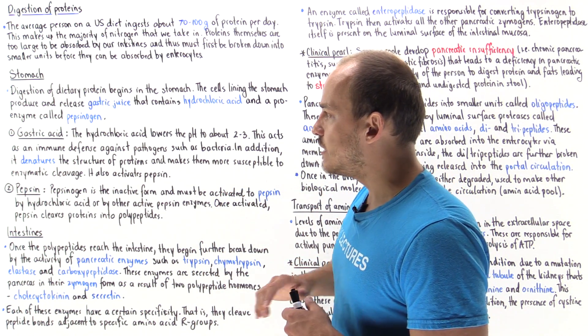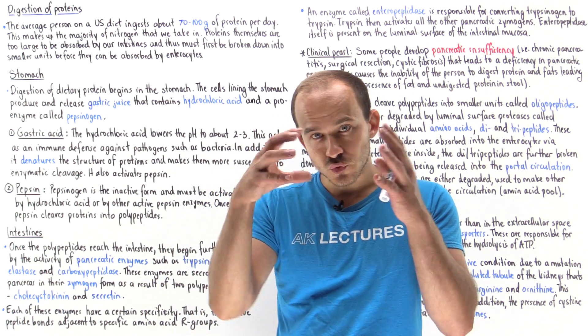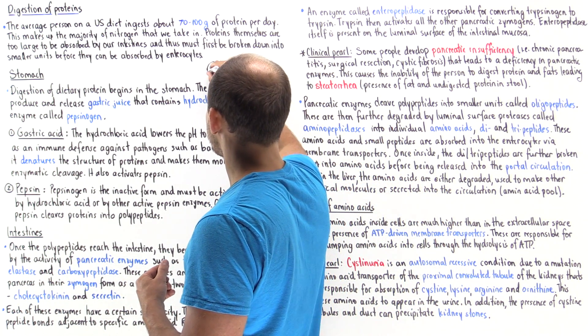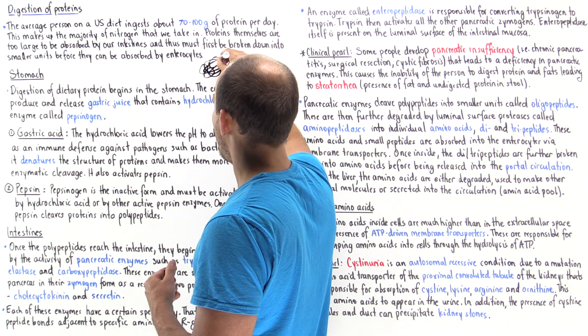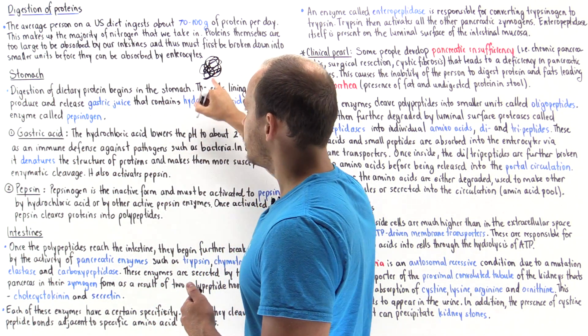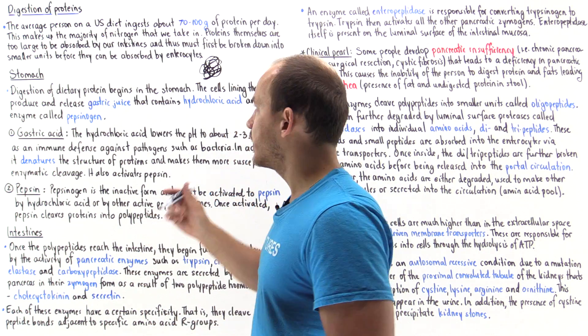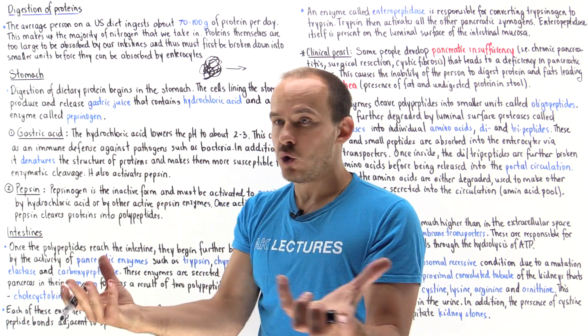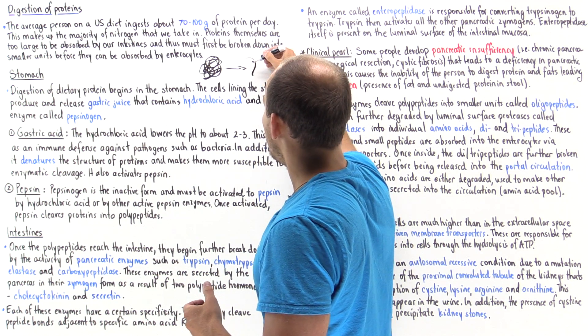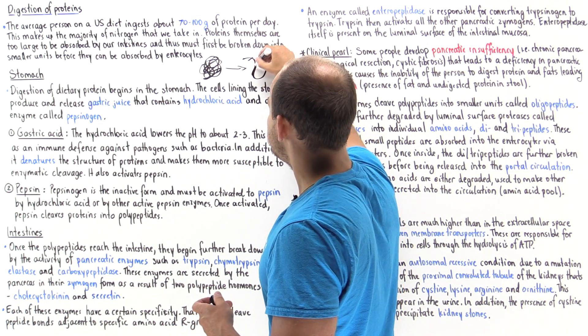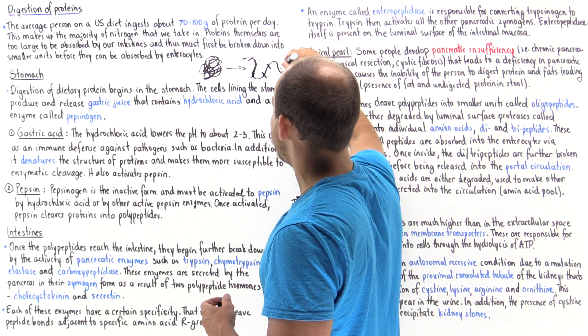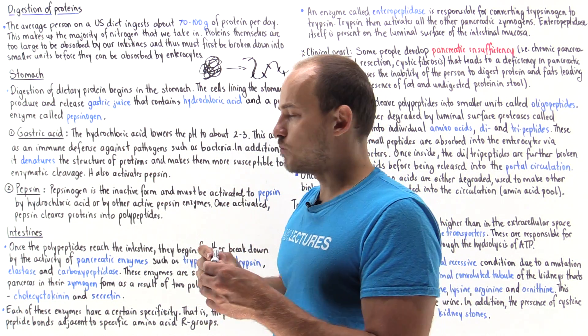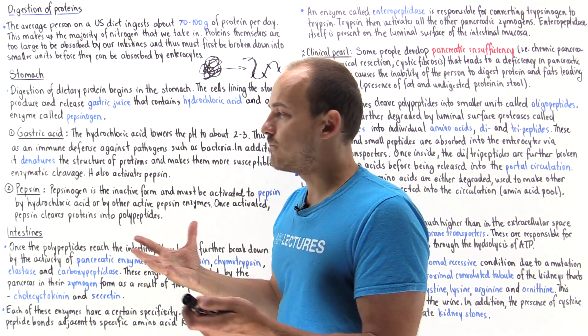The second thing it does is it begins denaturing the structure of the protein. Normally the structure of the protein, for example, looks like this—it's a very large, very compact structure. But when it's placed into this very acidic environment, it basically denatures, it opens up, it unfolds. As it unfolds, it gives access to all these peptide bonds, which now can be acted upon by all these different types of proteolytic enzymes.